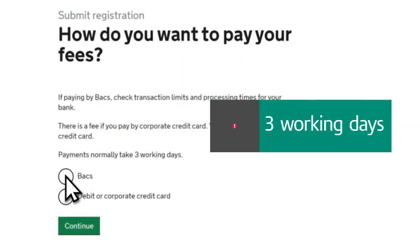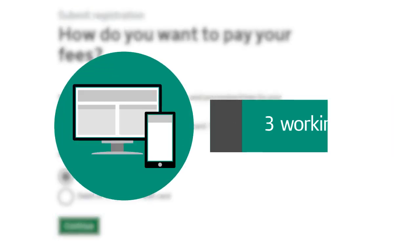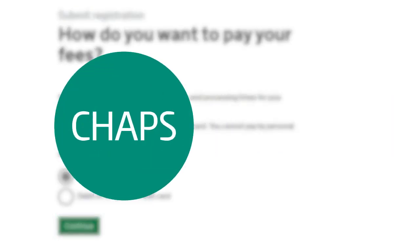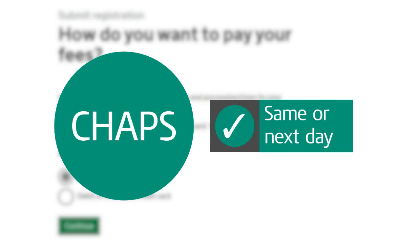The time it takes for the payment to go through depends on how you pay. For example, payments by BACs can take three working days to clear. Online or telephone banking or payment by CHAPs should clear on the same or next day.